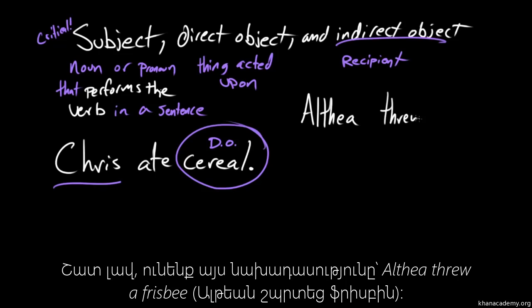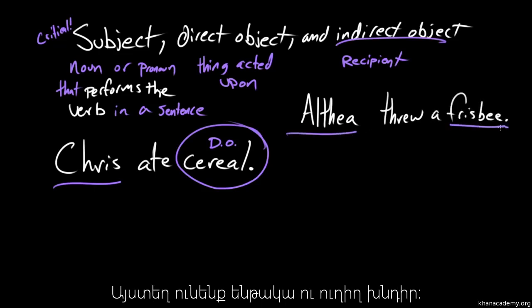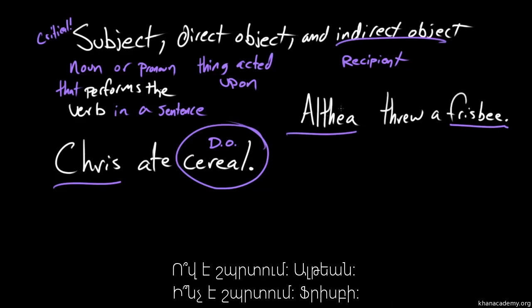Alright, so we have this sentence, straightforward. Althea threw a frisbee. So we've got subject here, and we've got direct object here. Who's doing the throwing? Althea, what did she throw? A frisbee.